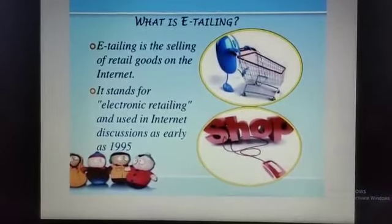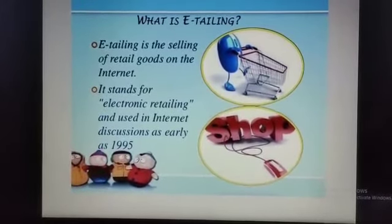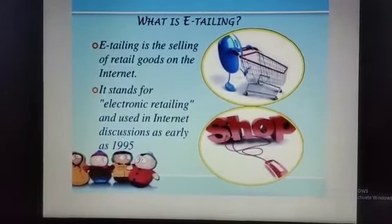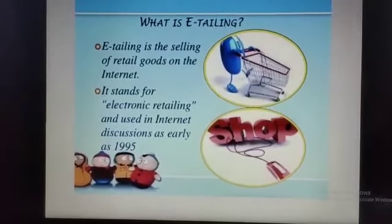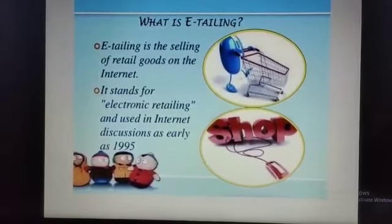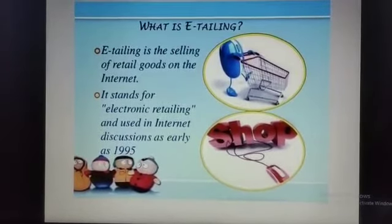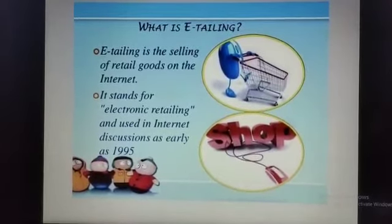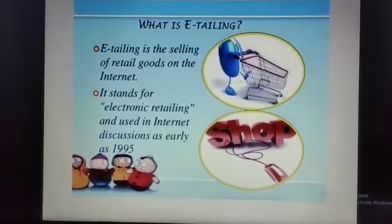How is the process of e-tailing done? It involves: first, visiting the website; then choosing the product which you want to buy; then online payment; after doing the payment, delivery of the product — you will get the product; and after that, taking the customer's feedback if required. So, this is the process of e-tailing.